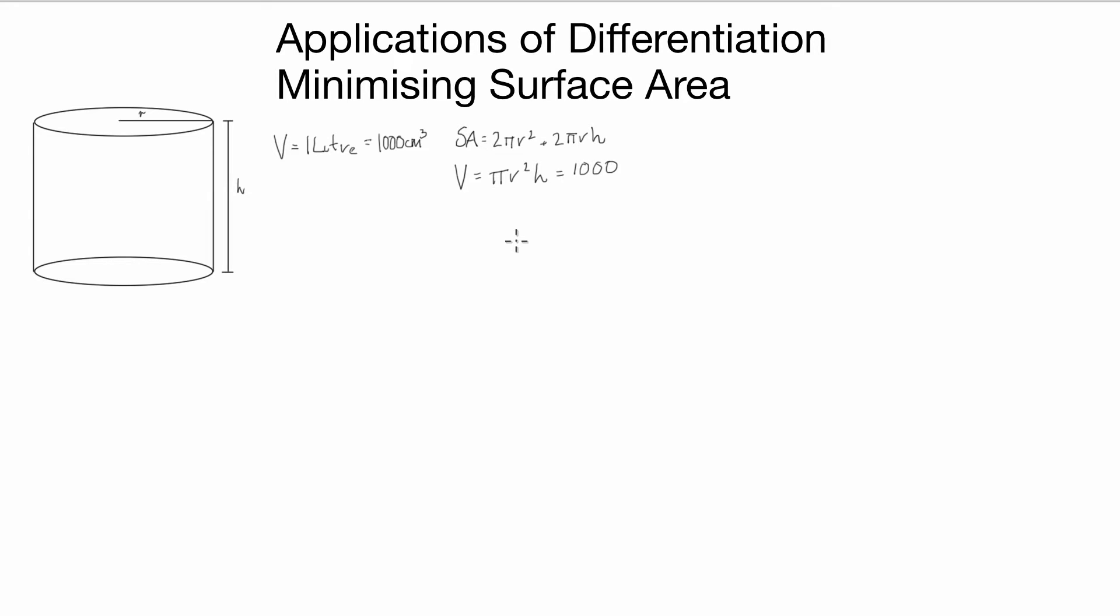Once we've done that we can then rearrange this so it's in terms of height and then we can substitute it in for height in the initial equation. So we know that height's going to equal 1000 divided by πr².